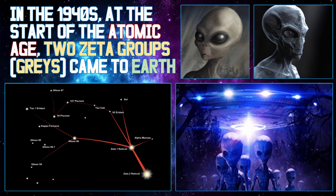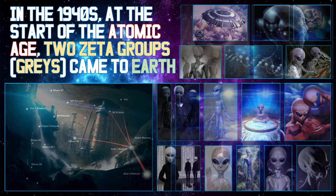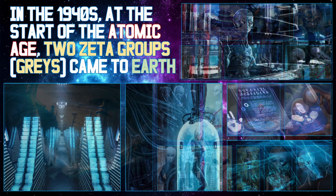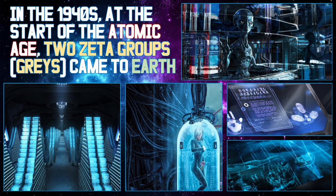In the 1940s, at the start of our atomic age, two Zeta groups — Greys — came to Earth. Zeta Reticuli is 39 light-years from Earth. One Zeta group had survived pollution and war on their planet by living underground. However, they had become sterile and could only reproduce through cloning. Human DNA and hybrid breeding involving abductions was organised to avert extinction.